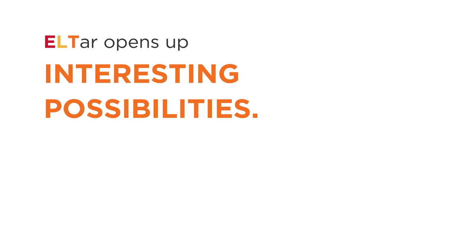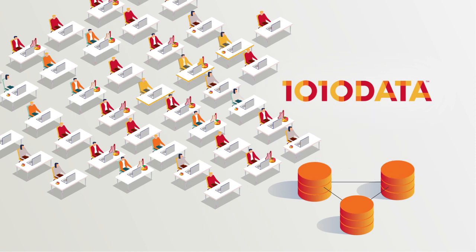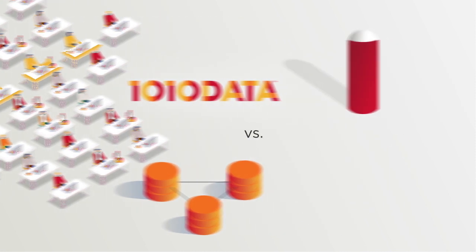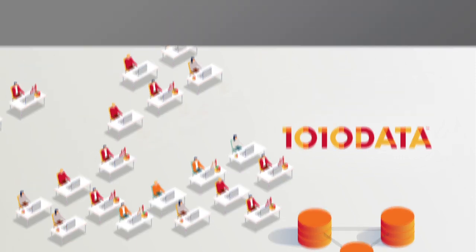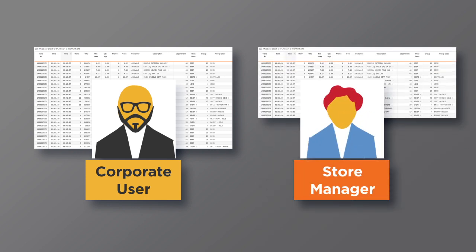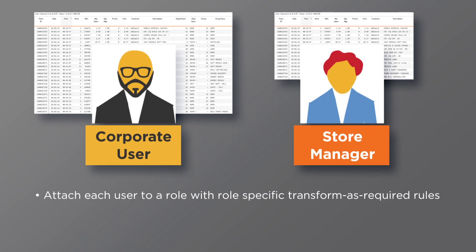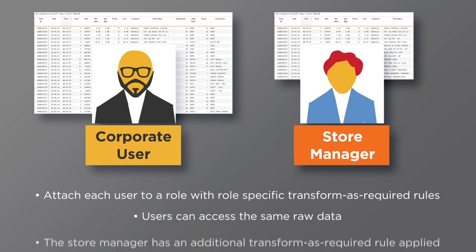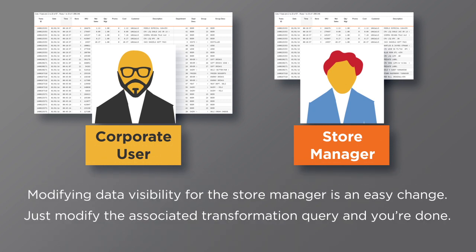ELTAR opens up interesting possibilities. 1010Data applies ELTAR to design multi-user enterprise data warehouses. Here, you need a single source of truth for a business and not isolated, unsynchronized silos. However, you may not want all users to see all data. For example, a corporate user needs visibility to all data, while a store manager should only see summarized data for a specific region. We can attach each user to a role and have role-specific transform-as-required rules. Our corporate and store manager users can access the same raw data, but the store manager has an additional transform-as-required rule applied. Modifying data visibility for the store manager is an easy change — just modify the associated transformation query and you're done.